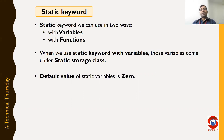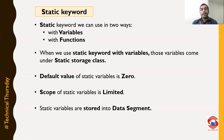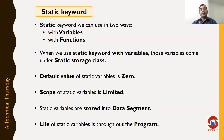The default value of the static storage class variables is 0, and the scope of the static variables is limited to the block in which they are declared. Static variables are stored into the data segment, and the life of the static variables is throughout the program.